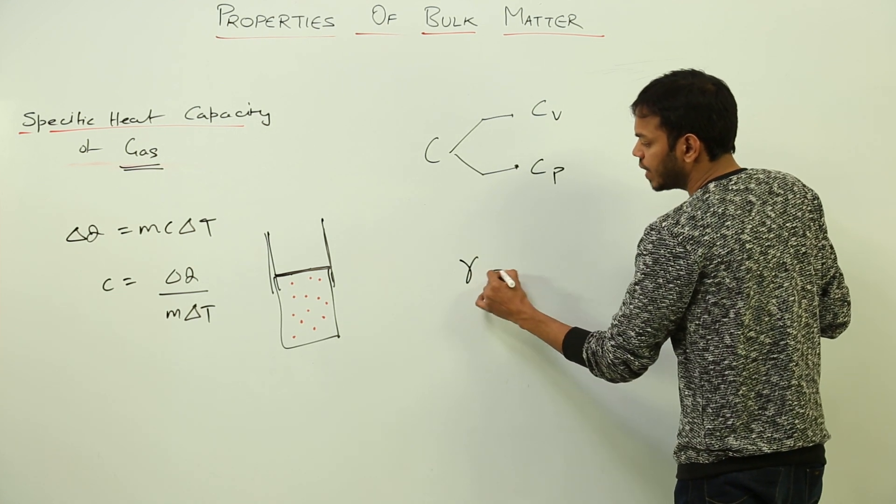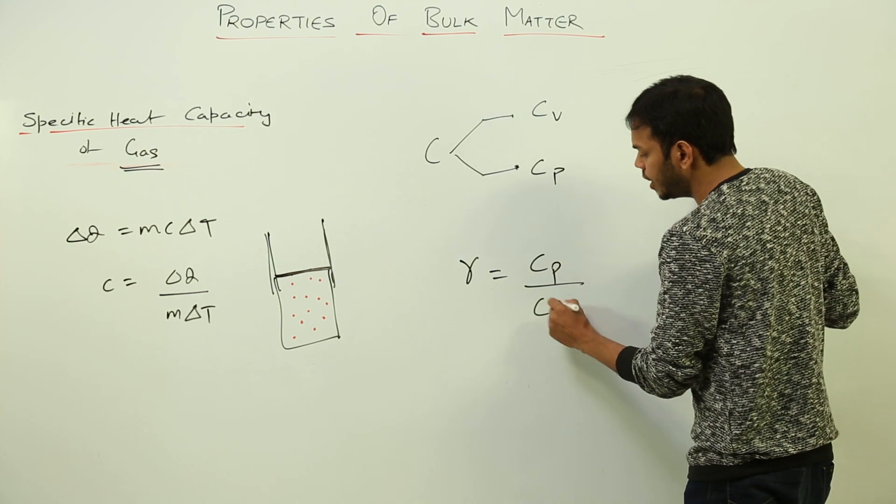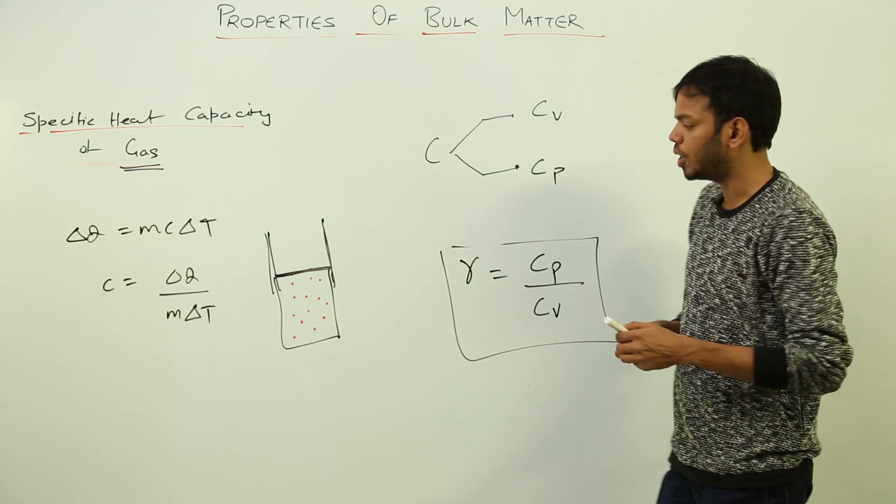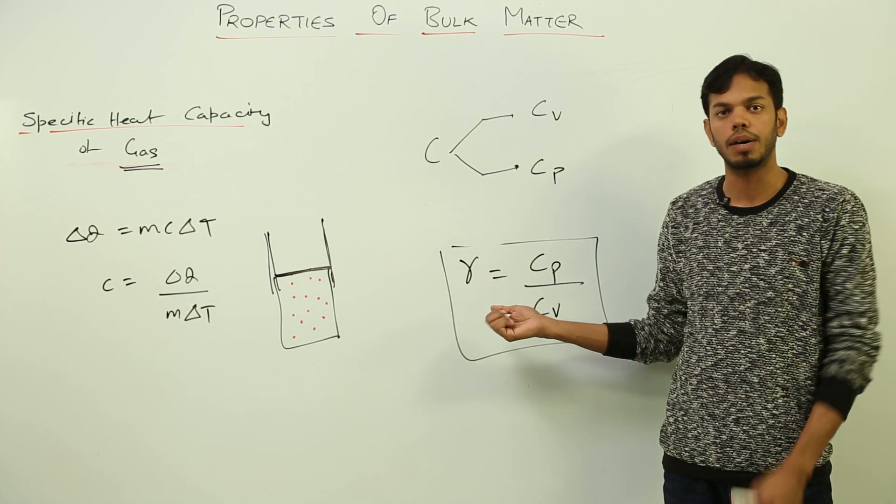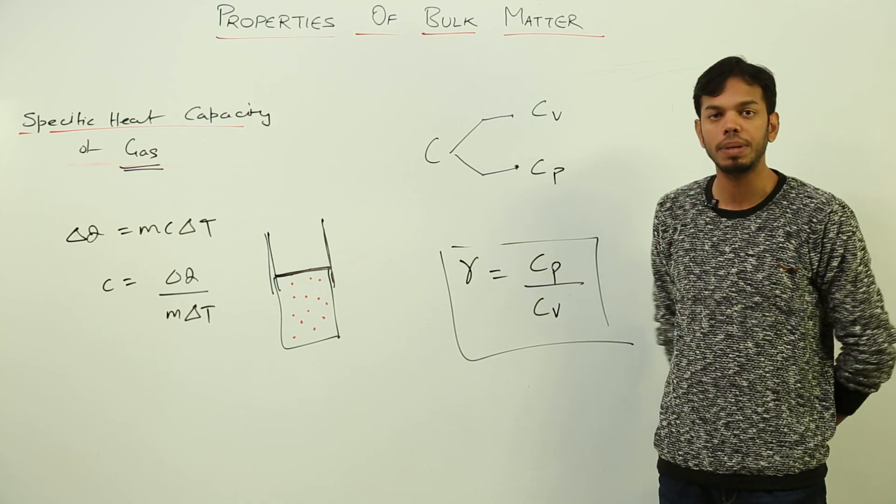We also have another term called gamma. This is the ratio of specific heat capacity of gas at constant pressure to that of constant volume, Cp/Cv. We are going to use this term a lot in the next chapter which is thermodynamics, and the value of gamma depends on the atomicity of gas.